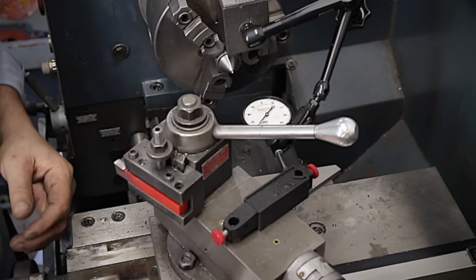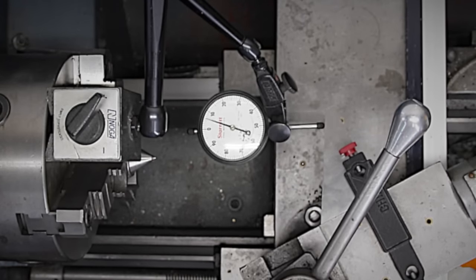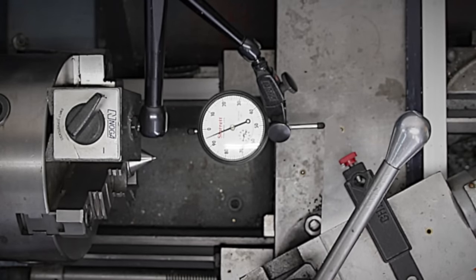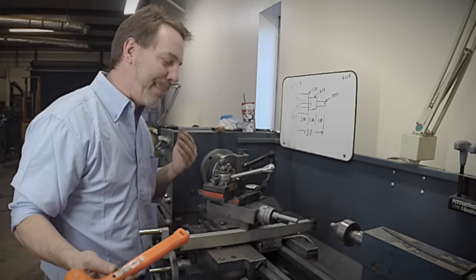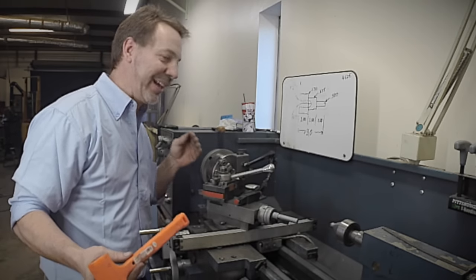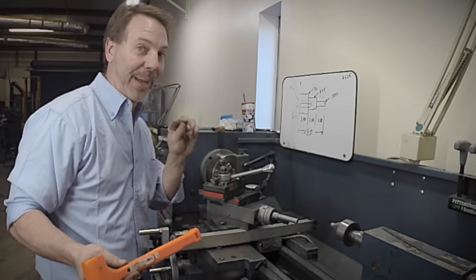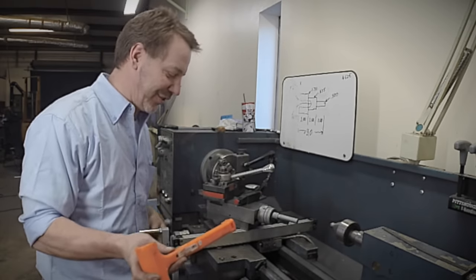So I'm going to turn this handle. And you can see the needle move. Now what I want to do is tap on it as I turn the handle. And my goal is to make the needle stop moving, not by breaking the dial indicator, but by just carefully changing this angle.